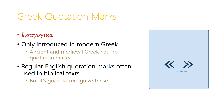Greek quotation marks are called 'eisagogika', and these are a little bit complicated because they can appear in two forms in printed Greek texts. Quotation marks were only introduced in modern Greek, and ancient and medieval Greek had no quotation marks — you could only tell that something was a direct quotation by looking at the context. Modern Greek has introduced them, and the regular English-style quotation marks are often used in biblical texts, but it's good to recognize the angled bracket quotation marks that are used in many printed texts in German or other European languages. We'll be using these interspersed with the regular English-style quotation marks in Paideia.